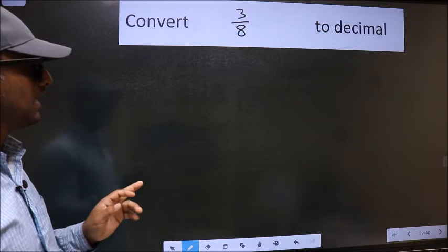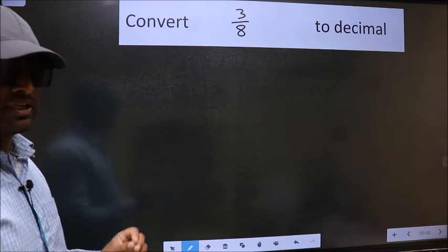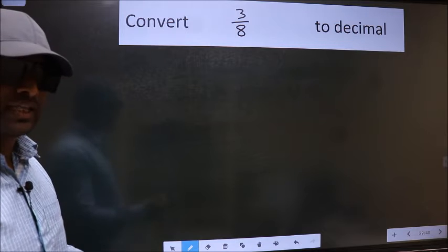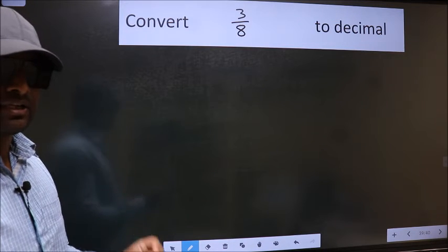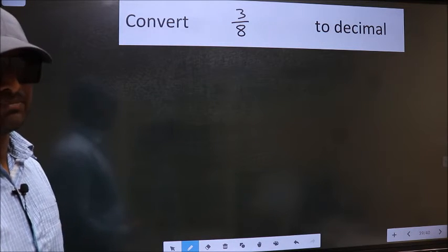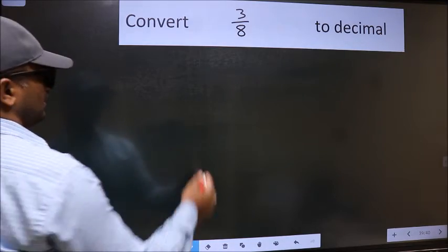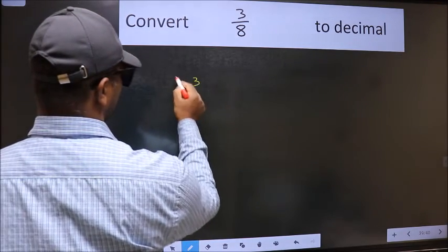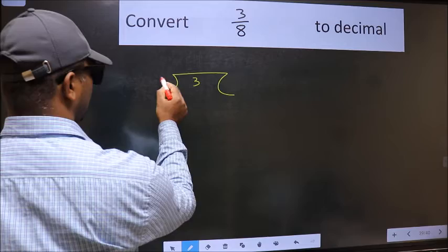Convert 3 by 8 to decimal. To convert, we have to divide. To divide, we should frame it in this way: 3 here and 8 here.